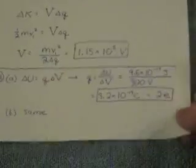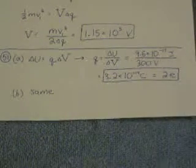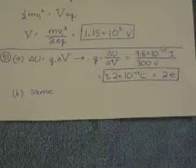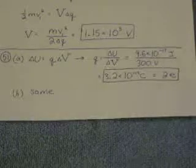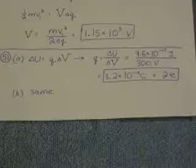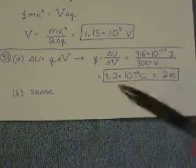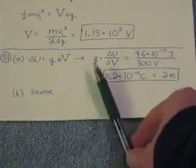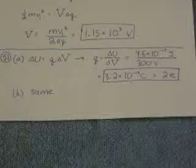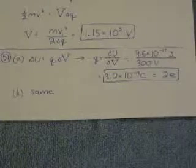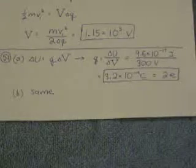Number 51, number 51 says an ion that passes through a 300 volt potential difference gains so much kinetic energy, what is its charge? Repeat for an ion that loses the same amount of kinetic energy. So change in potential energy is q times the voltage difference. So we get charge equals change in potential energy divided by voltage difference. Plugging in those numbers, we get 3.2 times 10 to the negative 19 coulombs, and that's equal to 2 times the elementary charge.